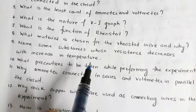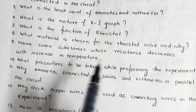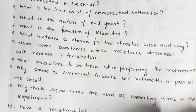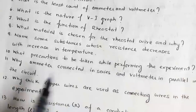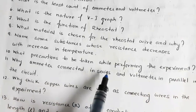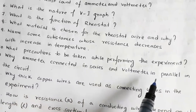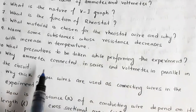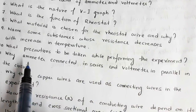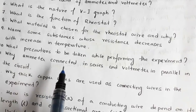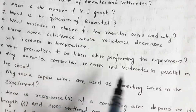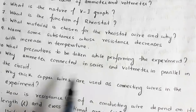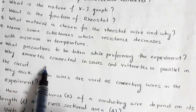Names of substances whose resistance decreases with increase in temperature: these are the semiconductors — silicon and germanium. For them, if you increase the temperature the resistance will decrease. Then, what precautions are to be taken while performing the experiments? The wire ends need to be cleaned properly, the connections should be tight.